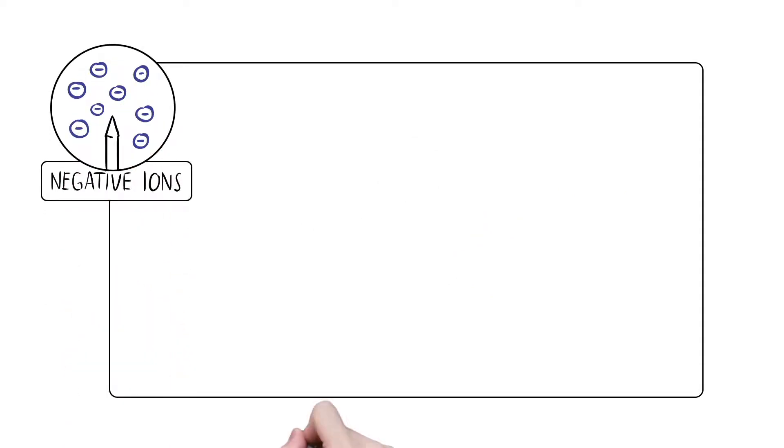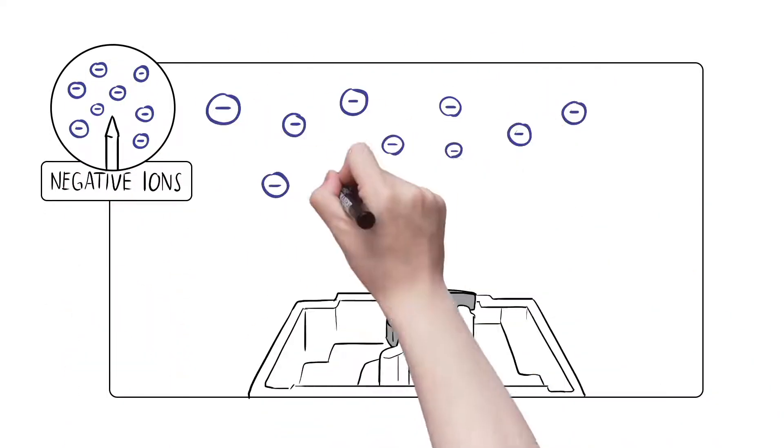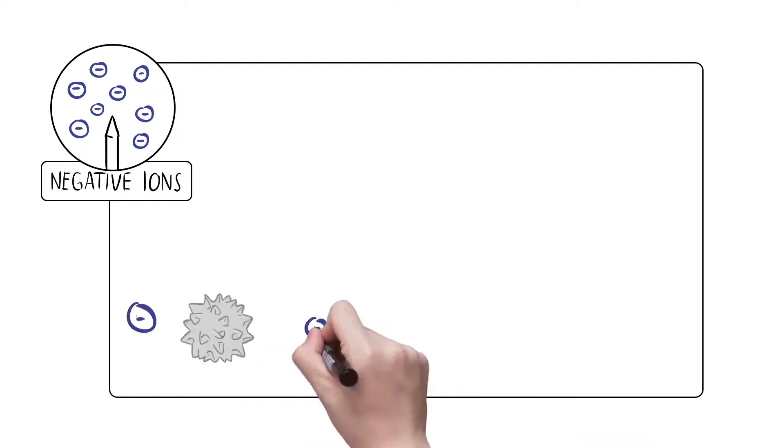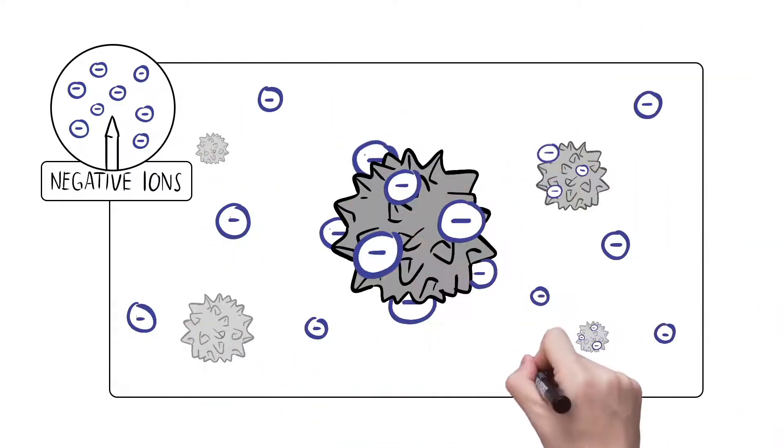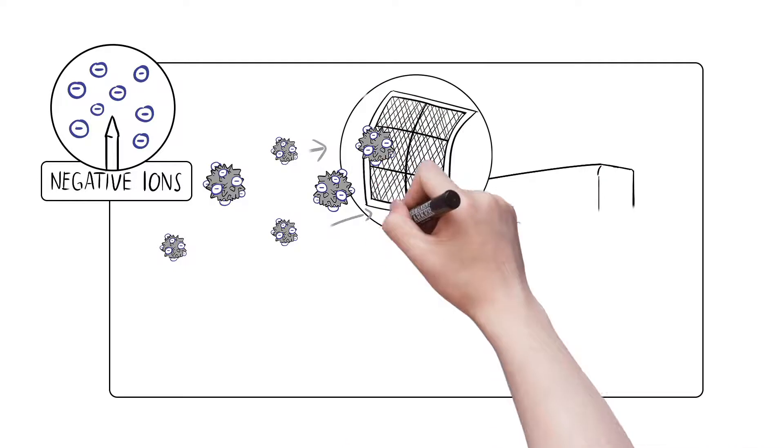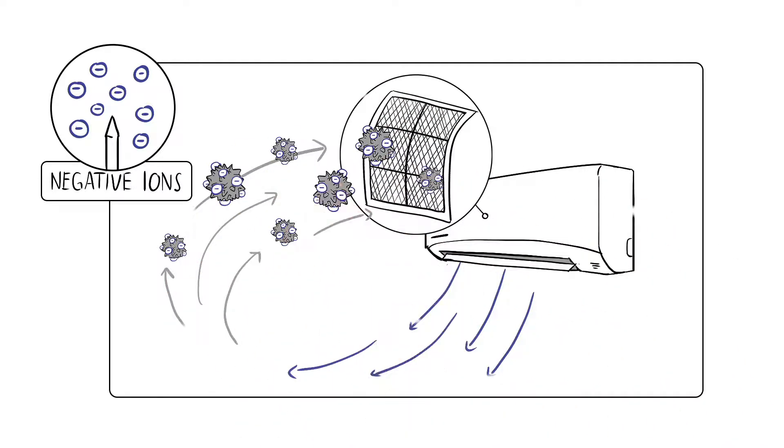Second, negative ions. The ion generator releases negative ions. Negative ions attach to dust particles. These particles are carried back and trapped at the filter, circulating purified air.